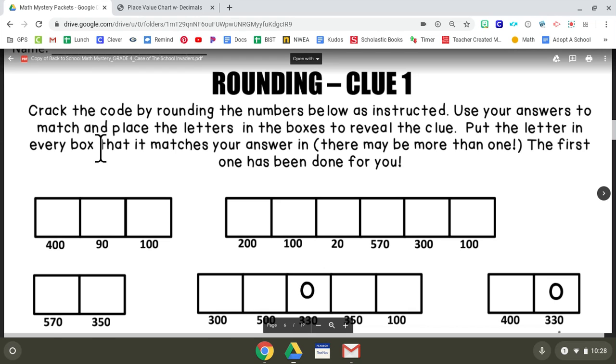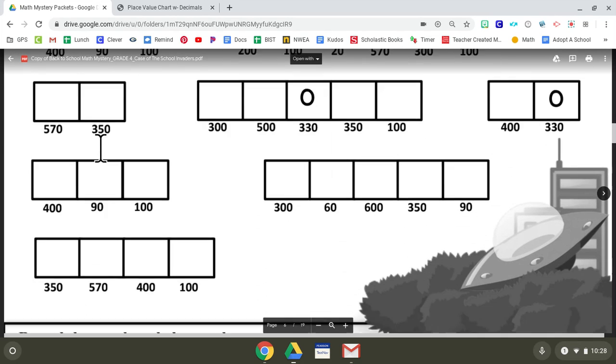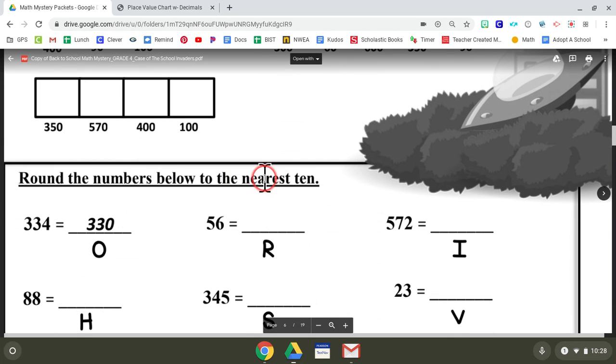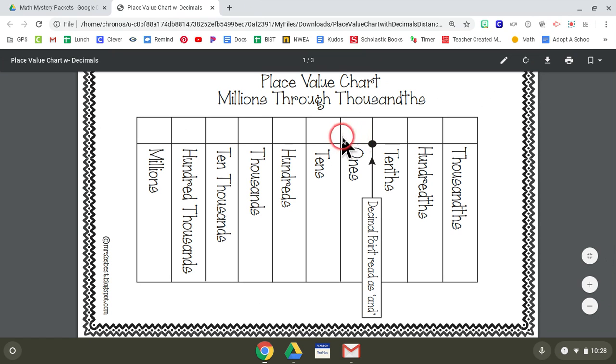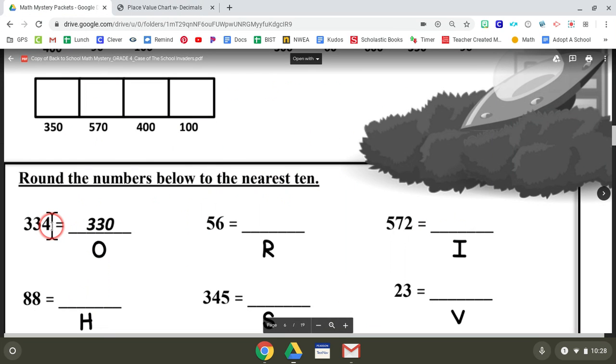It says crack the code by rounding the numbers below as instructed. If we come down here, it says round the numbers below to the nearest ten. If we look at our place value chart as a refresher, we have ones, tens, and hundreds. So the tens is the second one from the right. If we're looking here at this number, the three is in the tens spot. We look next door to see who's there—it's a four. Four and below, let it go. It goes to zero, so the four becomes a zero: three hundred and thirty.